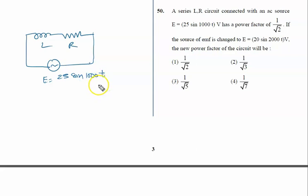It has a power factor of 1/√2. Power factor means cos θ is given by 1/√2. It means one thing is clear: θ must be 45 degrees.